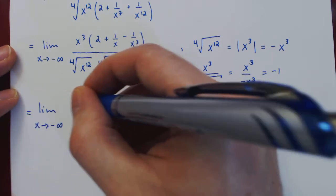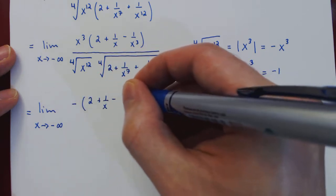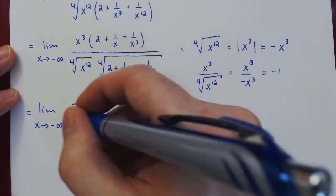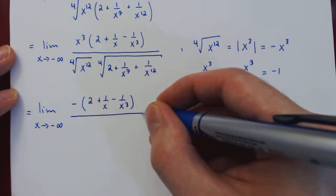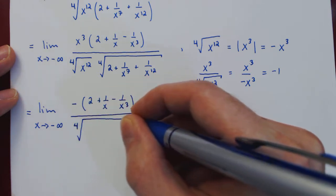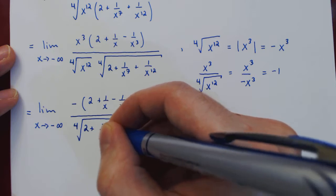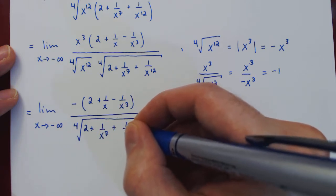So we are left on the numerator with negative of 2 plus 1/x minus 1/x³. And on the denominator, the fourth root of 2 plus 1/x⁷ plus 1/x¹².